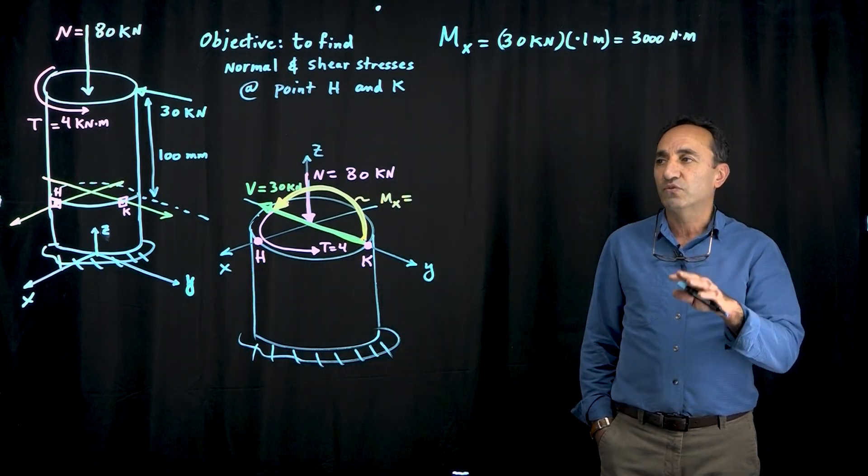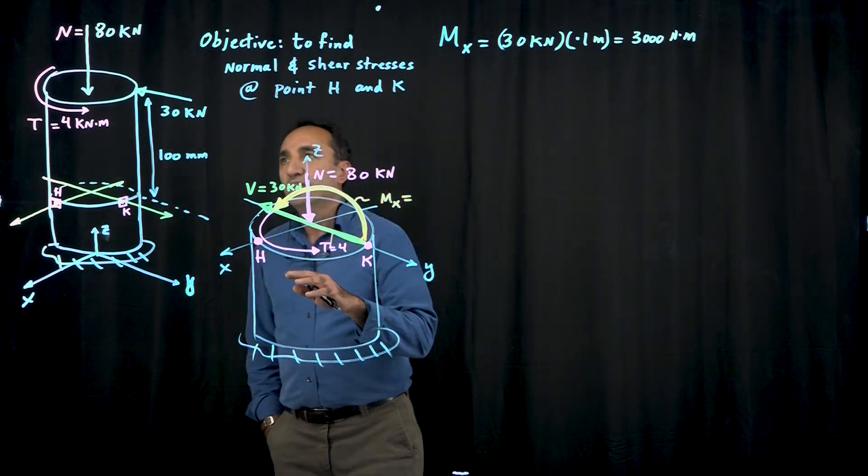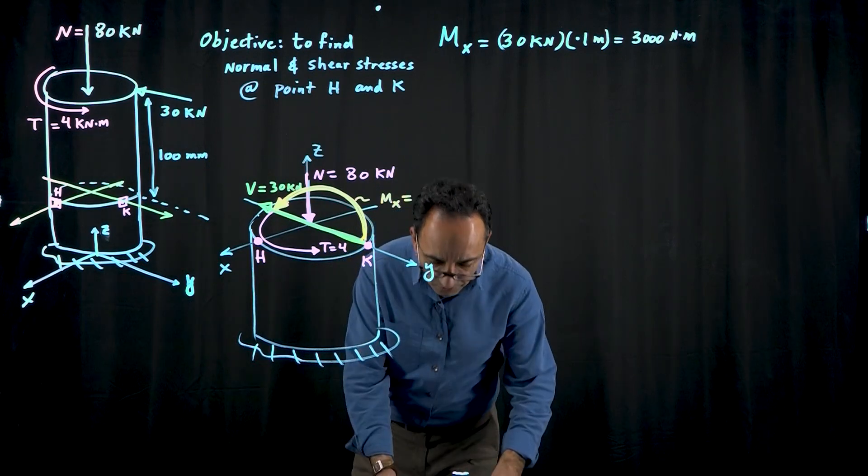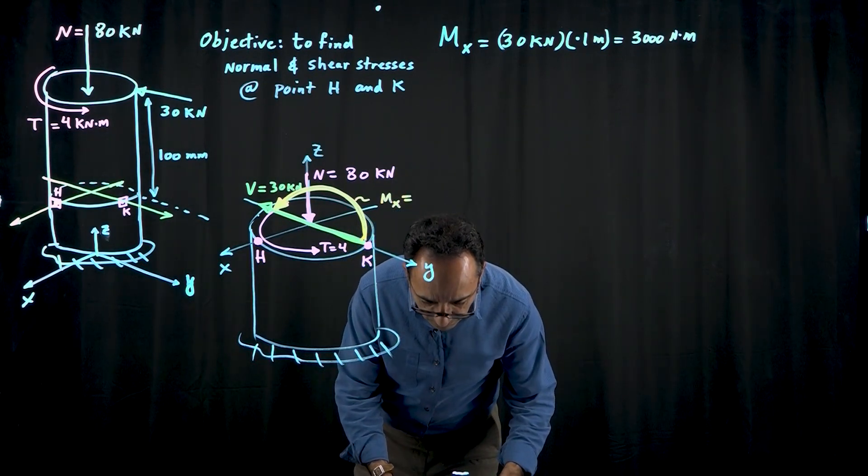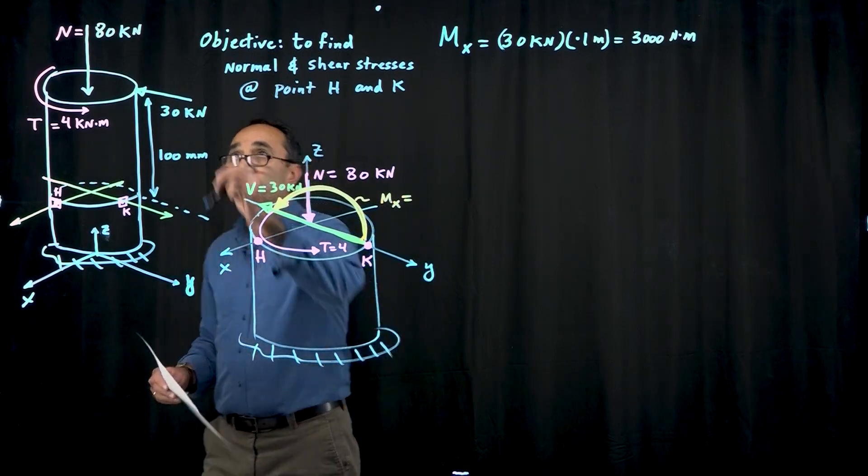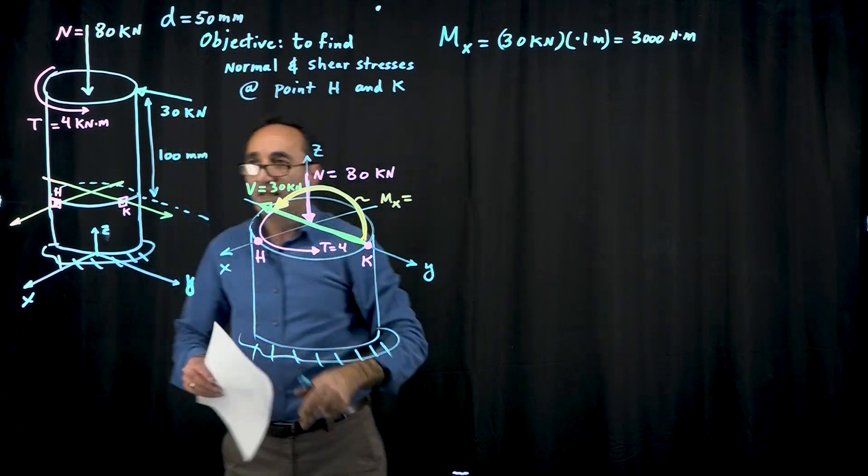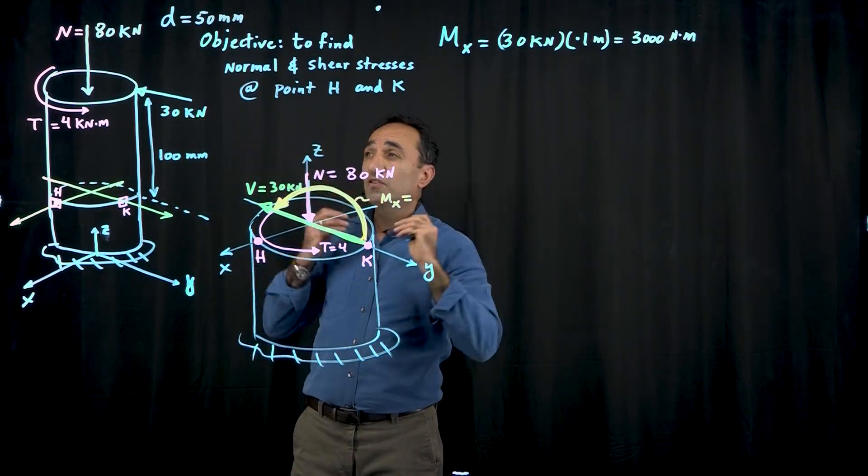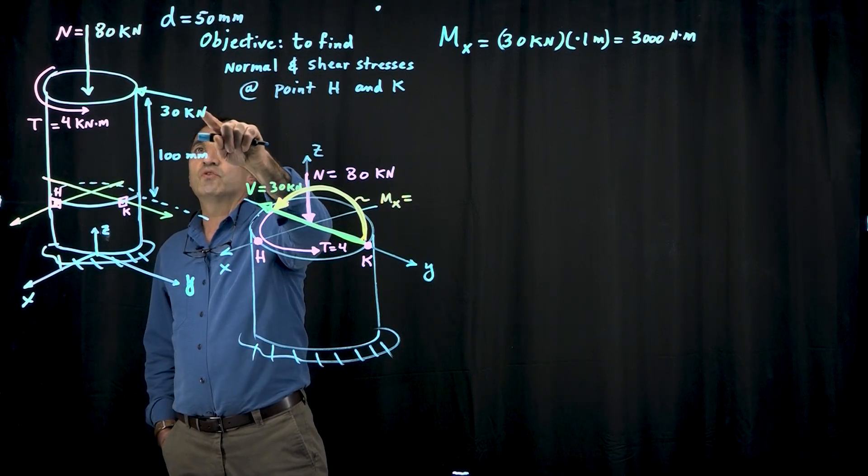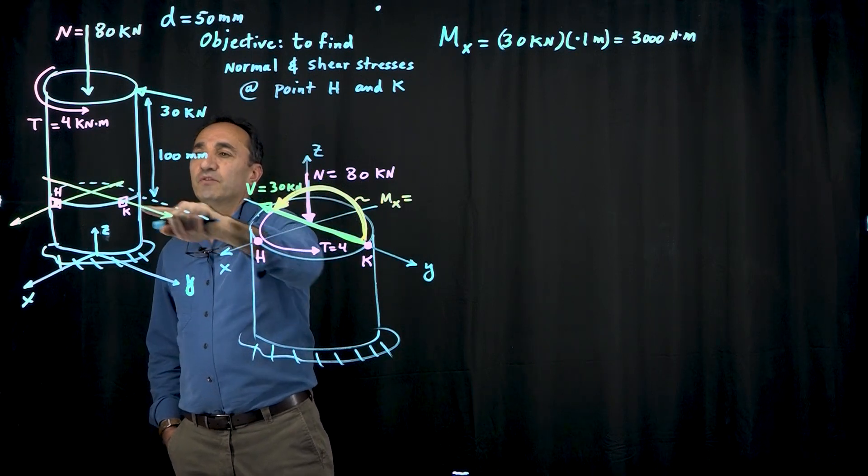What we have here is a solid shaft with a diameter of 50 millimeters. This shaft is subjected to a bunch of loads: a shear load of 30 kilonewtons parallel to the y-axis,